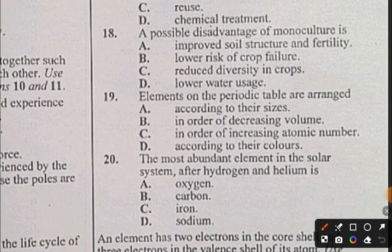Question 19: Elements on the periodic table are arranged: A) according to their sizes, B) in order of decreasing volume, C) in order of increasing atomic number, D) according to their colors. The answer to question 19 is C, according to the atomic numbers. Question 20: The most abundant element in the solar system after hydrogen and helium is: A) oxygen, B) carbon, C) iron, D) sodium. The answer to question 20 is A, oxygen.